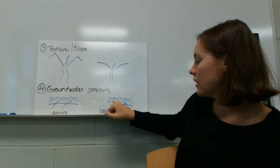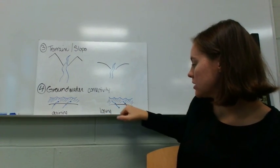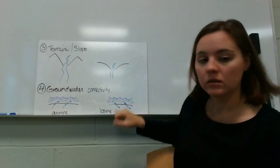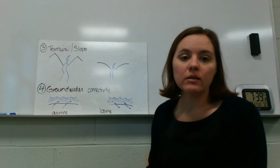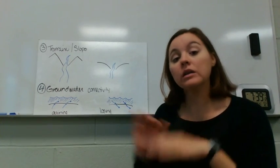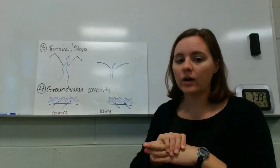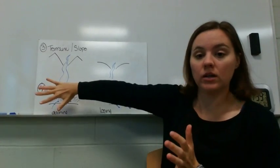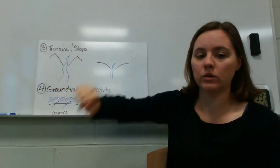Or we can have a losing stream, which means that the surface water from the stream or the lake is actually going down and infiltrating into the groundwater. And you can also have a situation where there is no connection with the groundwater and surface water. In that case, we just don't even consider this; we just consider the first three things.